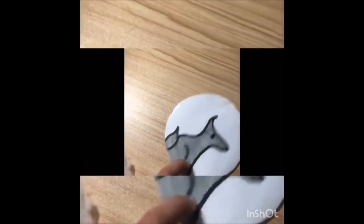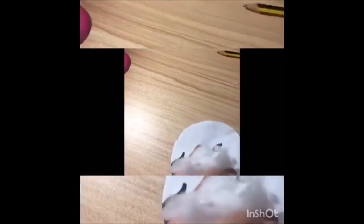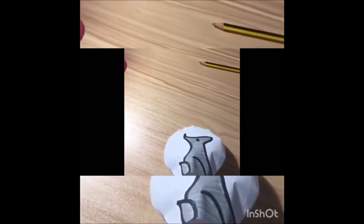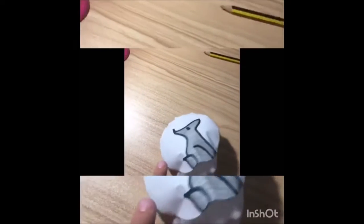Adesso prendete un po' di ovatta e la dovete infilare dentro allo squishy, per metterne il più possibile. La dovete infilare dentro da questo buco. È normale se ne esce un po', non fa niente. Cercate di riempire bene tutti gli spazi. Adesso con altro scotch dovete chiudere gli spazi senza far uscire l'ovatta.